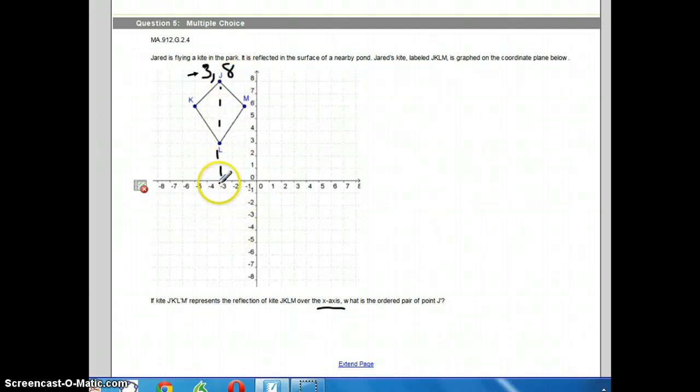It'll be at negative 3, negative 8 now instead of negative 3, 8. And so again, the value that is the axis that we're flipping over, that value doesn't change. The value that changes is the opposite one.